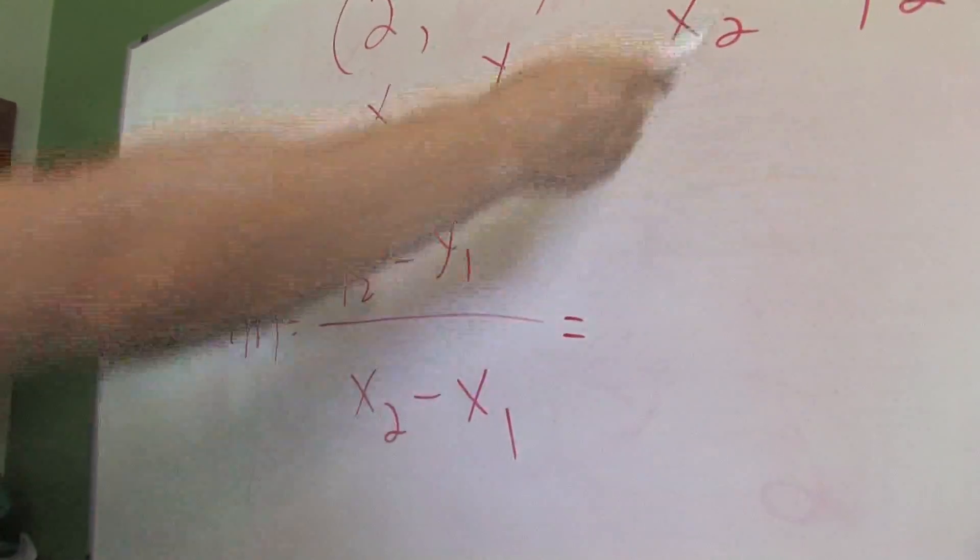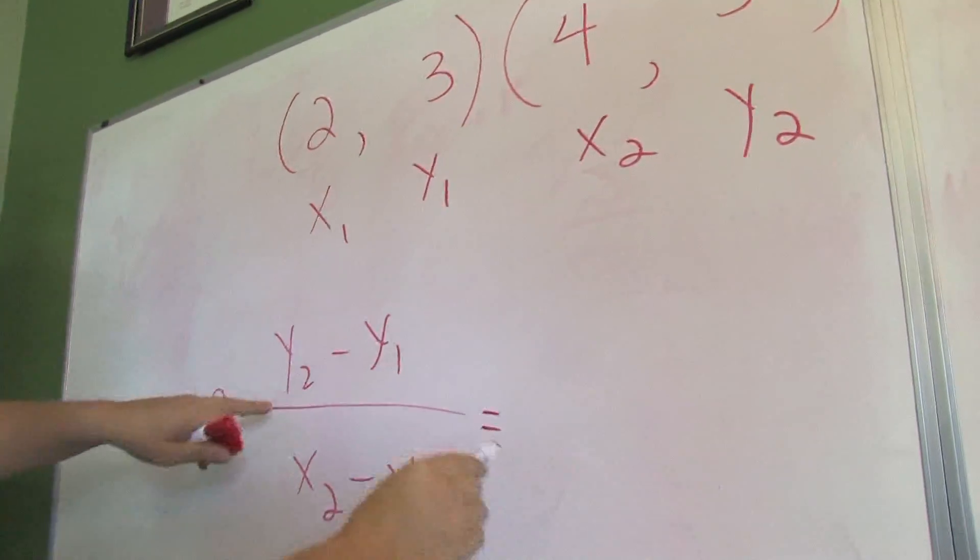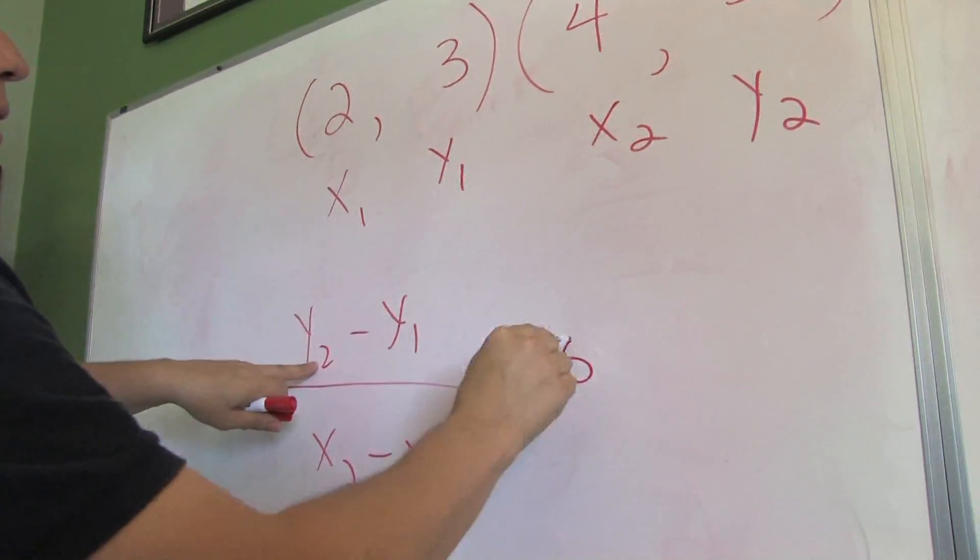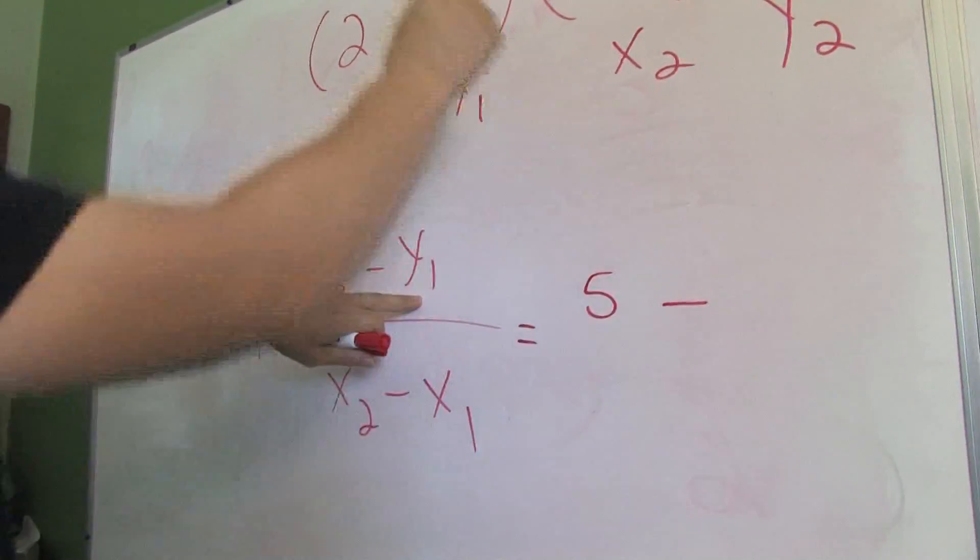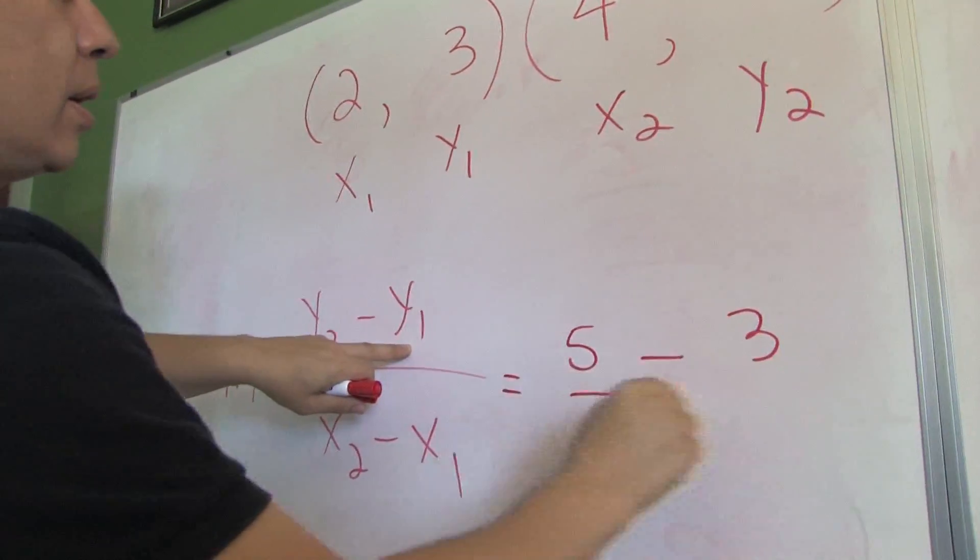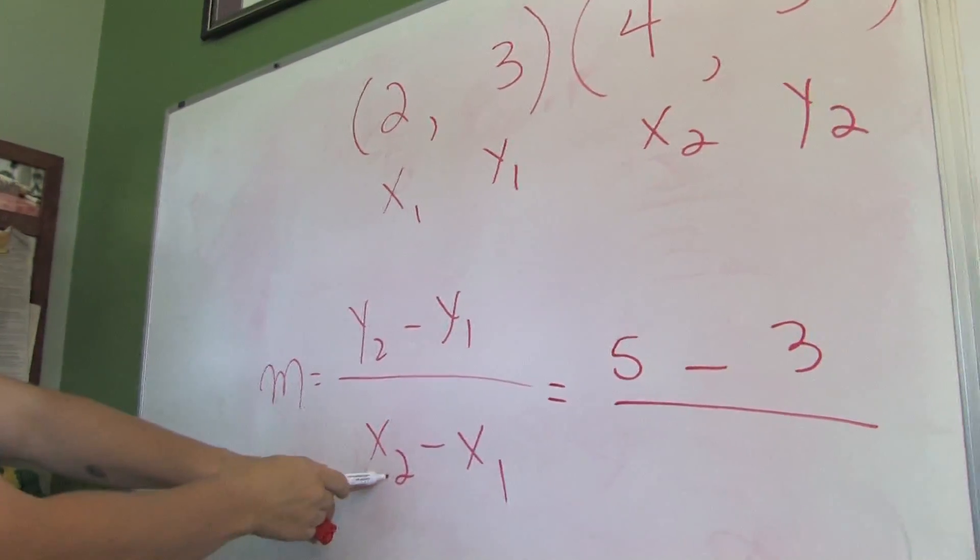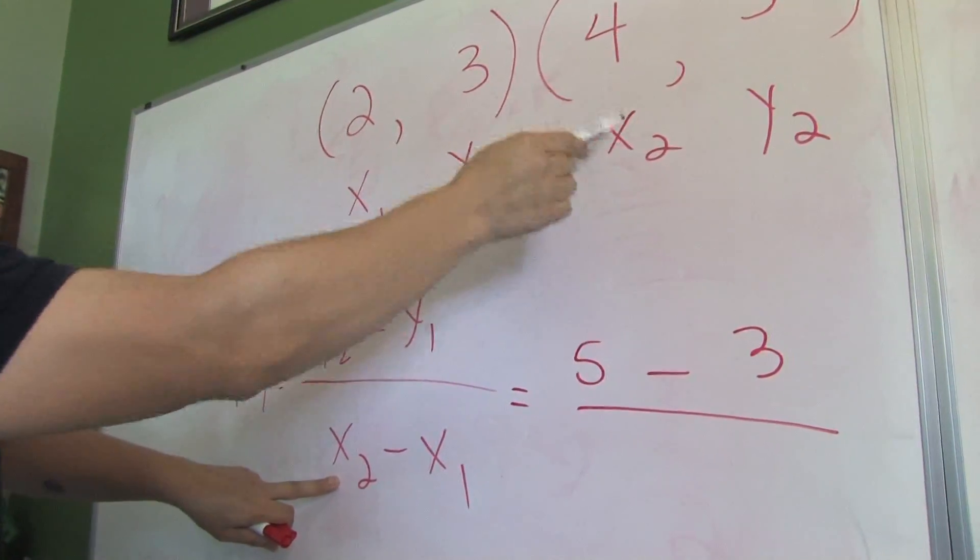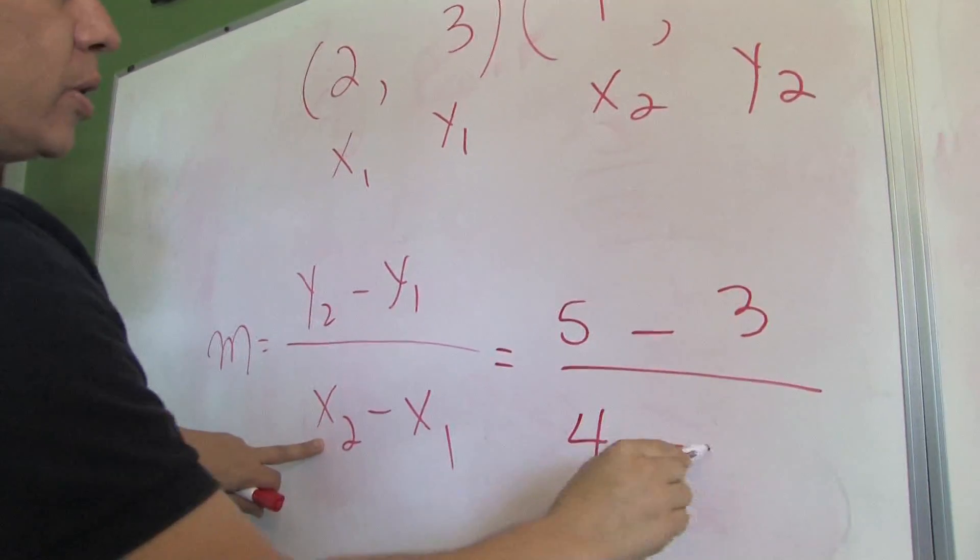Now, once you have the formula, just look up here and tick off the numbers. So, y2 is 5 minus y1 which is 3 over, just follow the formula, x2. There is x2. That's why it's so important to label the numbers so you don't miss your numbers.